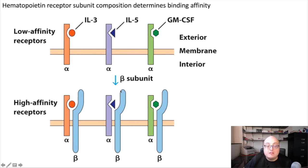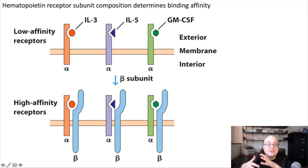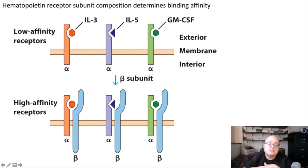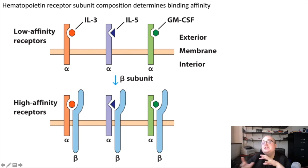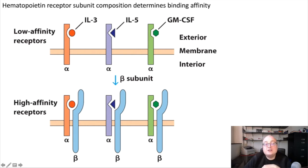This is an example of how we can change the binding affinity of a whole bunch of different receptors just by turning on a single subunit — the one gene encoding the common beta subunit. There are other potential regulatory mechanisms that we won't discuss here, such as these receptors competing with each other for the beta subunit. But this is really all I want to say about hematopoietin receptors. Because there are so many different hematopoietin cytokines, it's hard to categorize them much further than this neat subunit biology. We'll introduce them as they come up throughout the course.